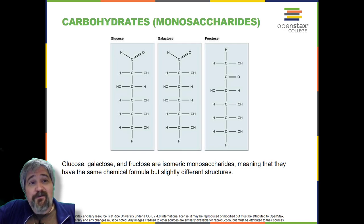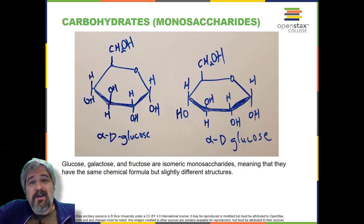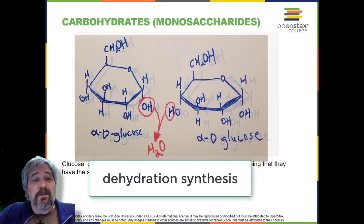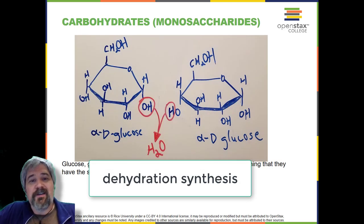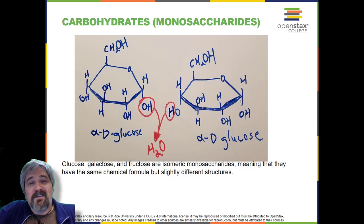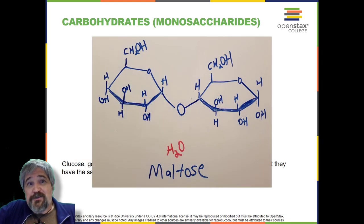Disaccharides (di for two, sacchar is still for sweet) form when two monosaccharides undergo a dehydration reaction, a reaction in which the removal of a water molecule occurs. During this process, the hydroxyl group of one monosaccharide combines with a hydrogen atom of another monosaccharide, releasing a molecule of water (H2O), and forming a covalent bond between atoms in the two sugar molecules.